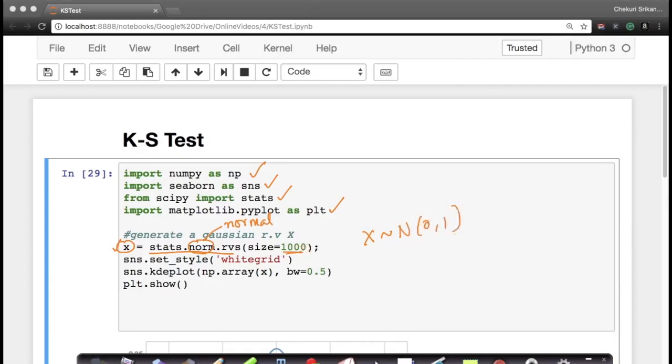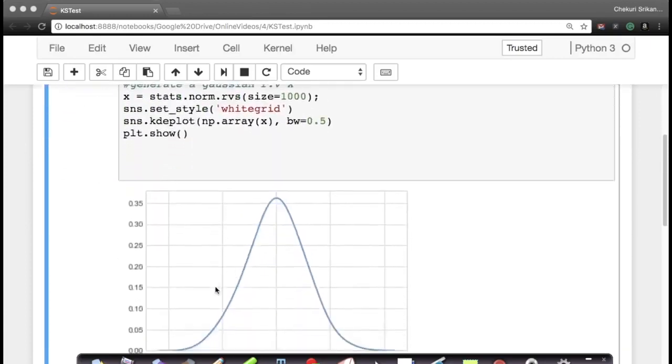Now, let's see what the distribution looks like. There's a simple code right here. It says set up your seaborn's grid style as white and then do a KDE plot. We know what KDE plot is, kernel density estimation plot, which plots your PDF using kernel density estimation. I'm just taking my numpy array x and doing the kernel density estimation to get the PDF of that.